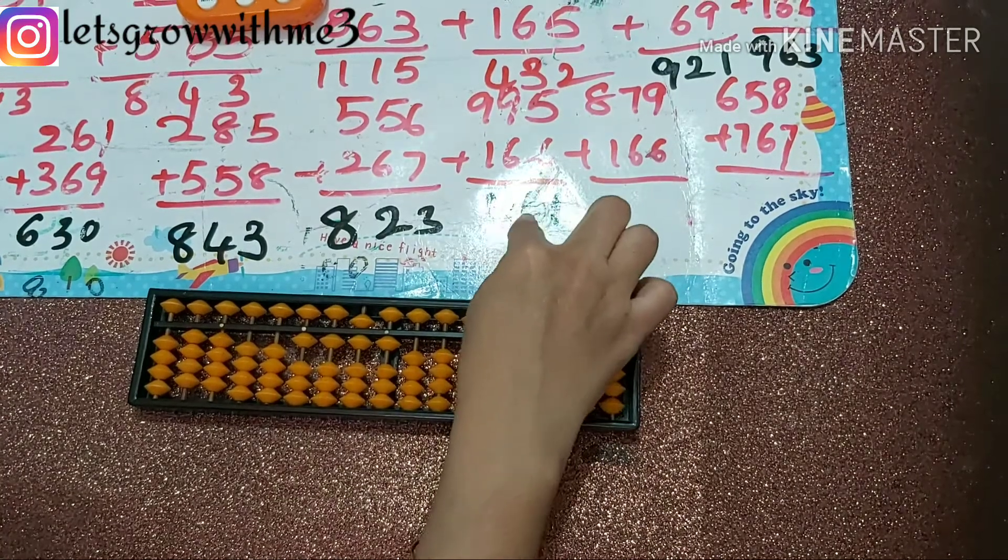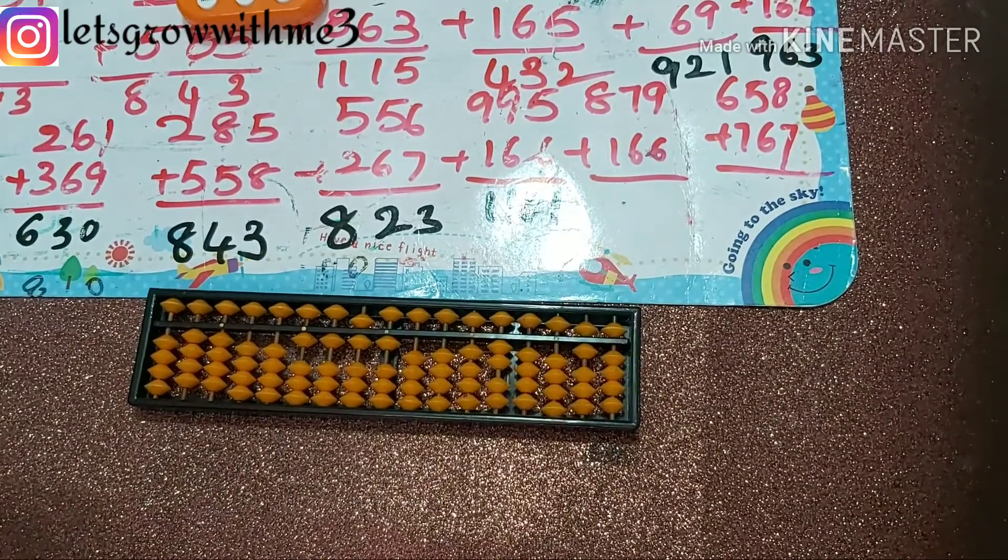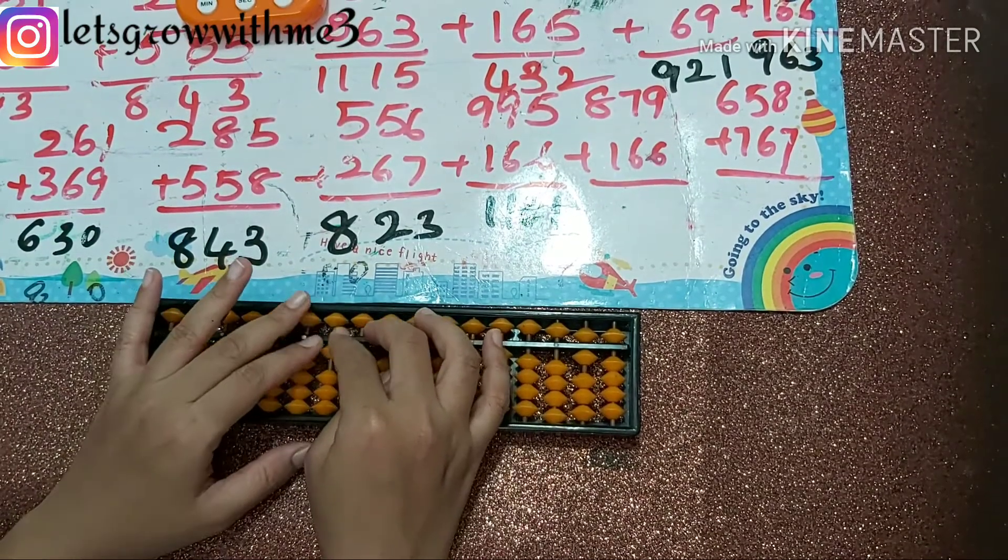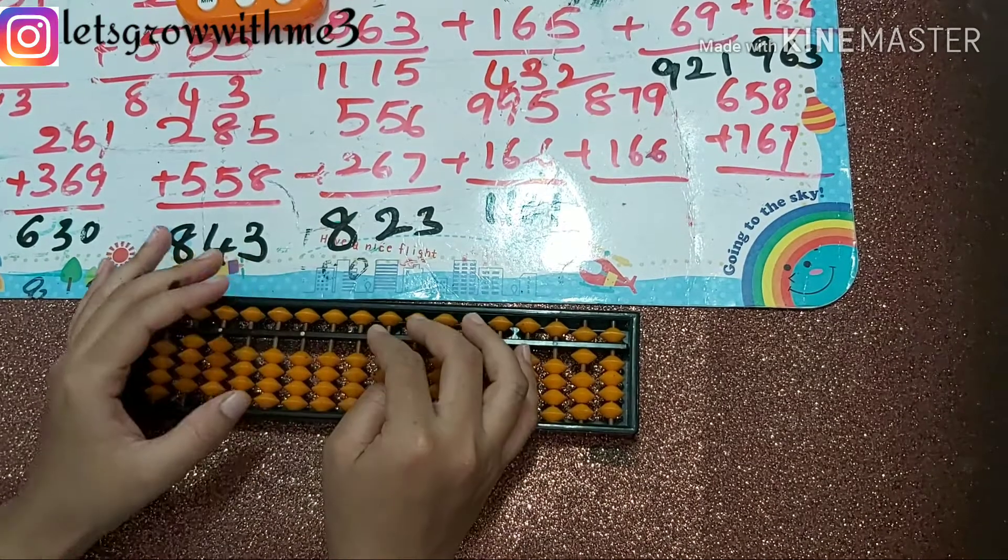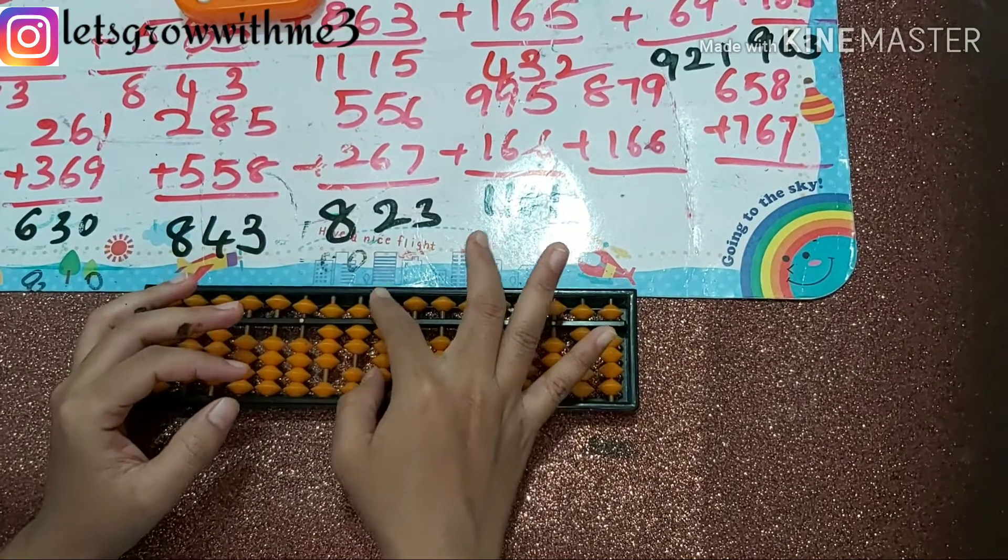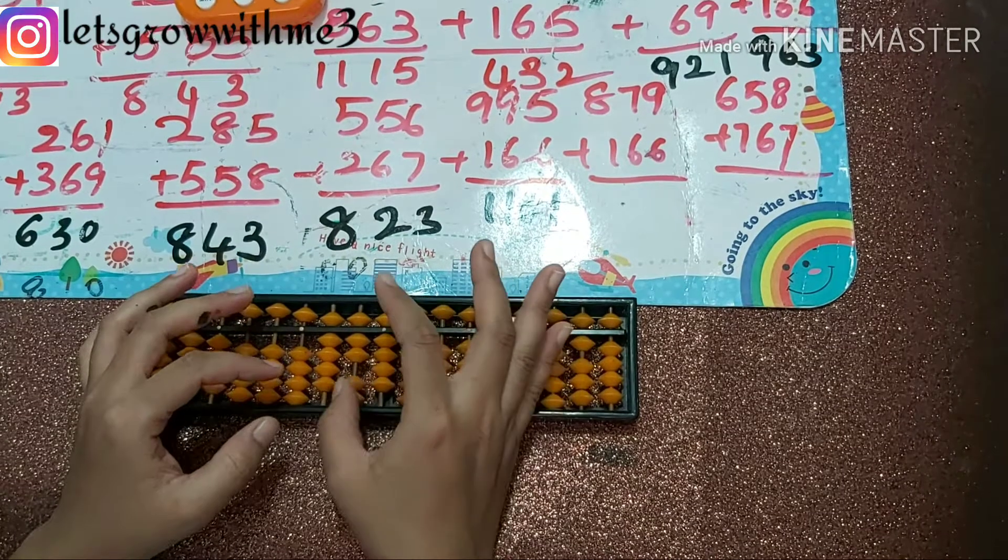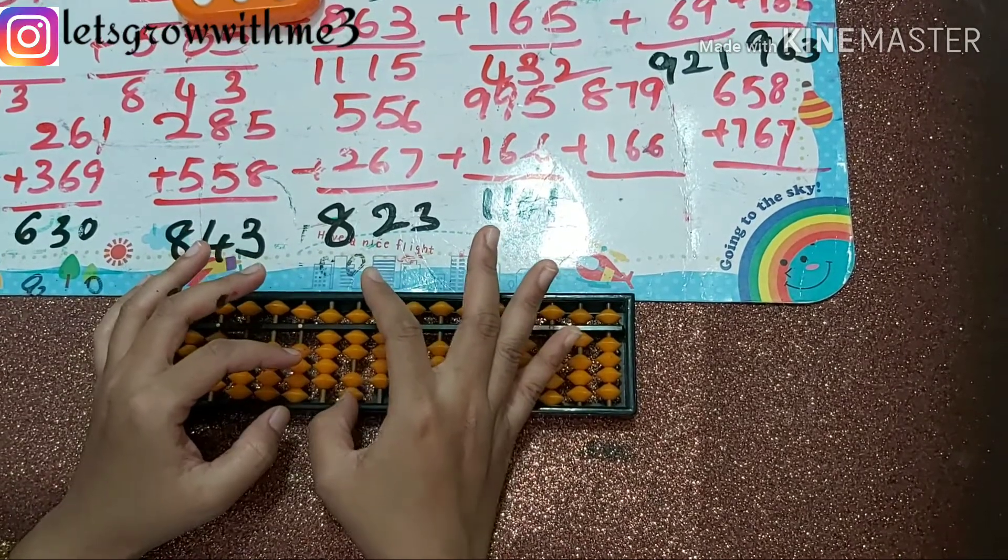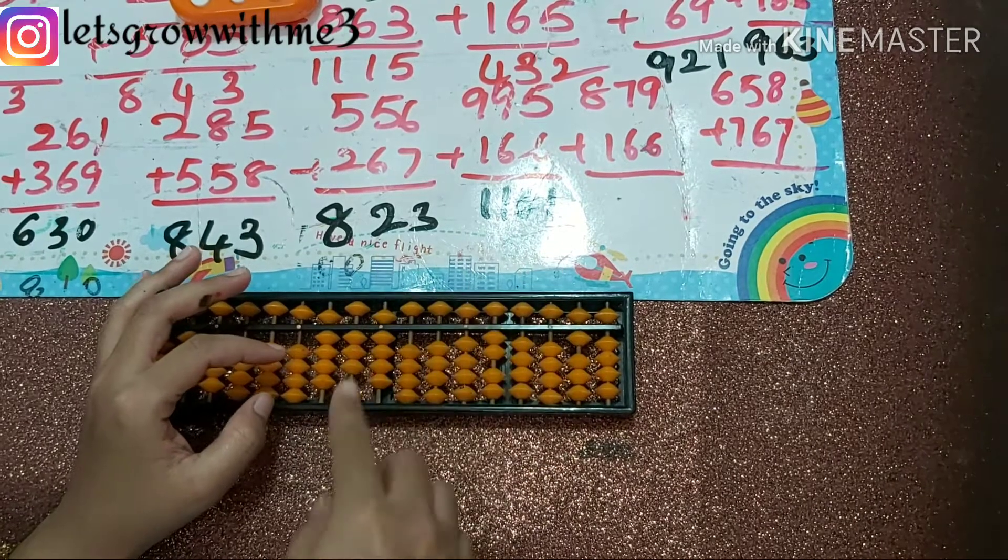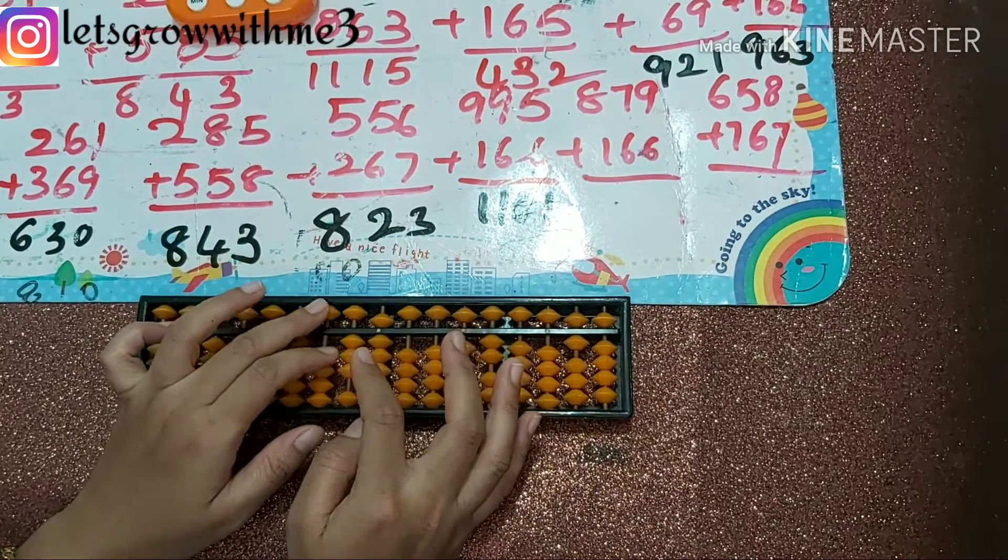Next one: 879 plus 166. So how to add 6 here? Plus 10 minus 4, we can't do. So papa up, mama up, babies up. So we'll do mama up, babies up first, then we have to do papa. Papa up means plus 10.